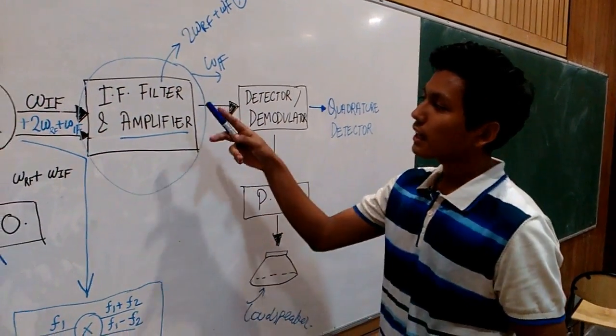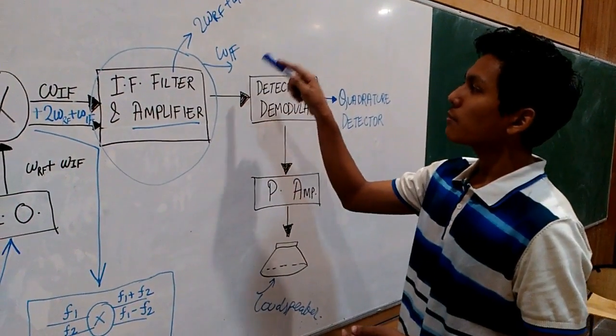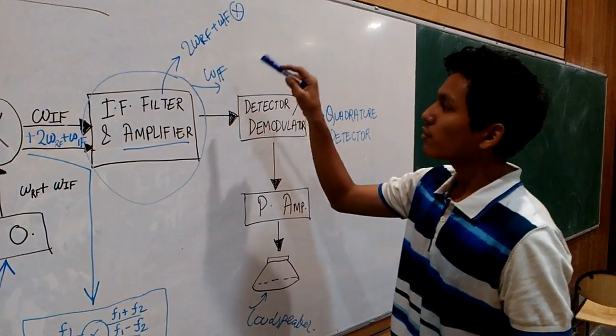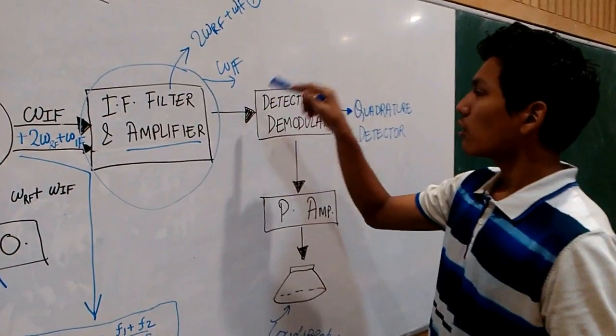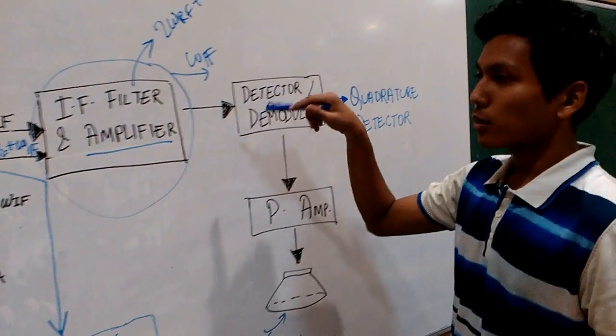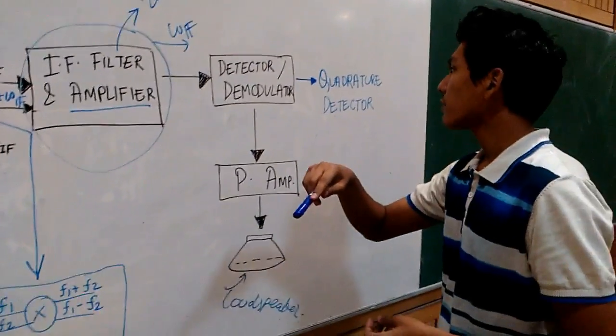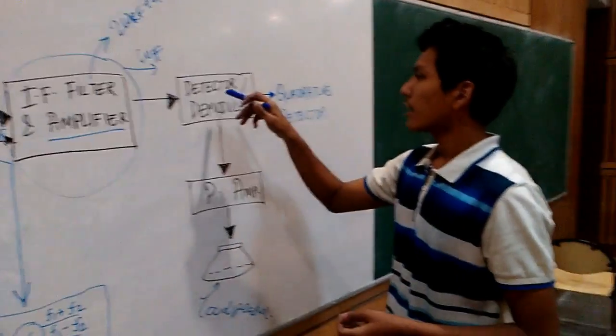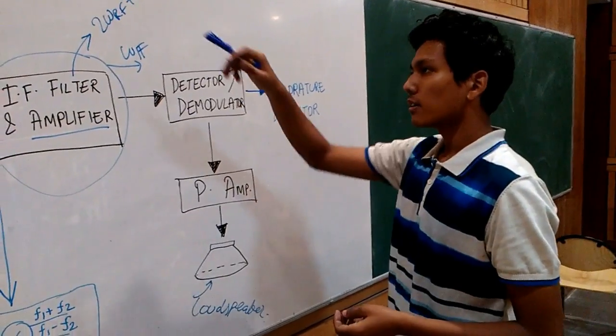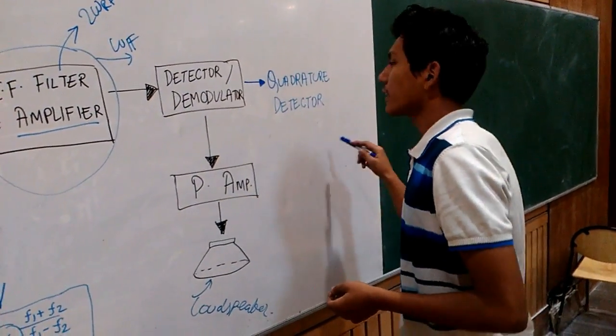So after the IF filter and amplifier part, what we are left with is a modulated signal with a center frequency of omega IF. Now we need to demodulate this modulated signal to get back the original audio signal which was modulated on a carrier frequency. For this purpose, we use a detector or a demodulator. For this particular receiver, we are using a quadrature detector.